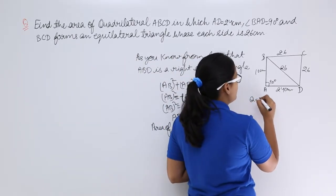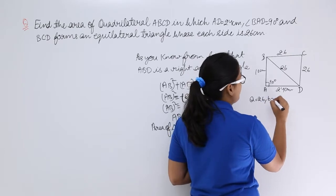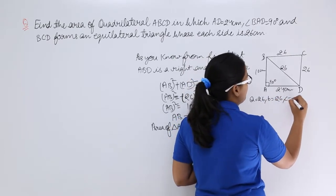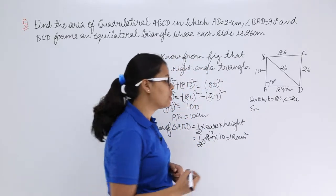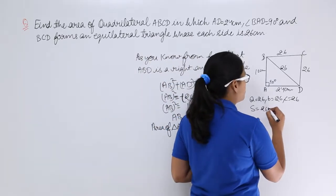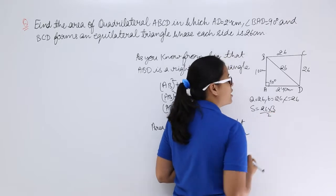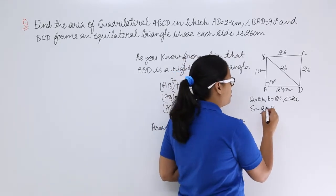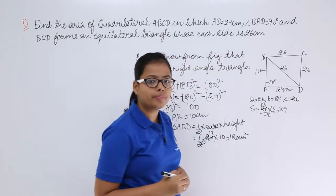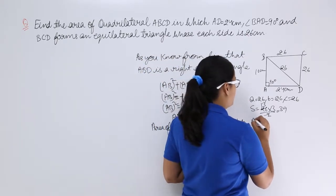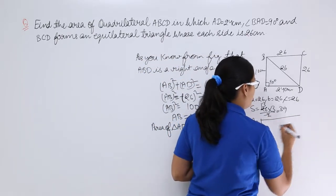You have all the sides. Now you can easily find out the perimeter of this which is 26 plus 26. You can write it as 3 times 26 and this will give you 78. So semi-perimeter S will be 39. Now let's find out using Heron's formula the area for this triangle.